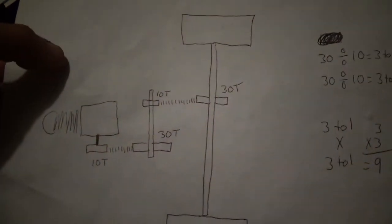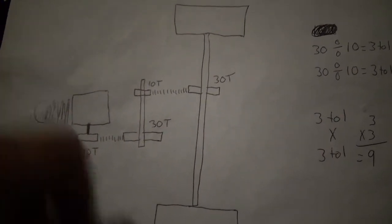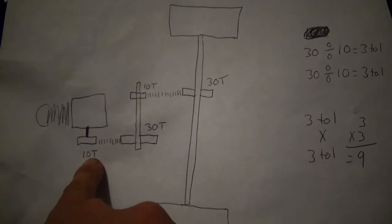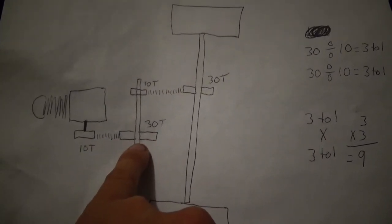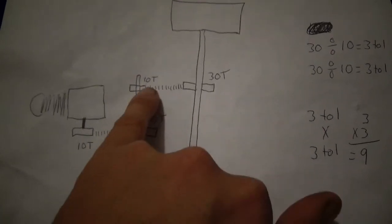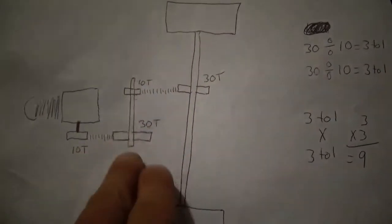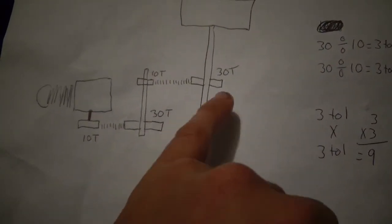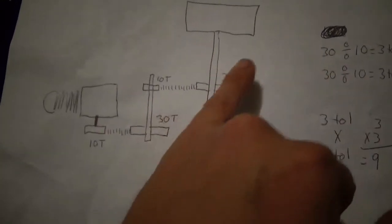Here we have a go-kart setup and now we're going to throw in a jack shaft. Engine with the centrifugal clutch has 10 teeth, then it's going to go to a 30 tooth, and the other end of the shaft there's a 10, then there's a 30.